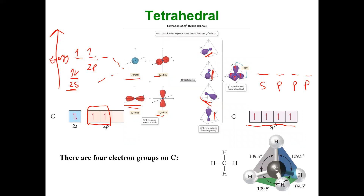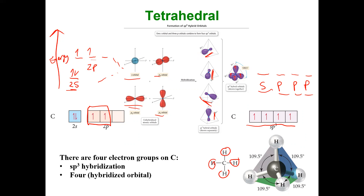So four electron groups, four atoms, sp3 hybridization. We need one s and three p's to make four hybridized orbitals. Because these are single bonds, they are called sigma bonds. I have four sigma bonds here, and there are four hybridized bonds.